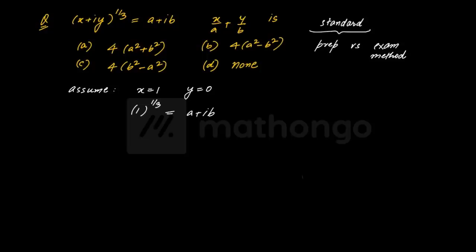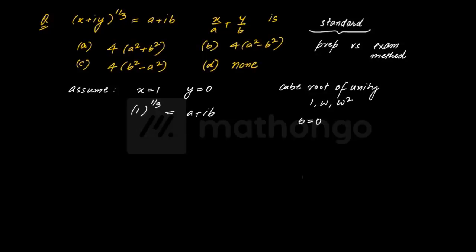Toh dekha jaaye ki cube root of unity ka question hoga. Cube root of unity humein pata hai kitne hote hain - teen hote hain: 1, omega, omega square. Toh 1 toh nahi loonga. Agar main 1 loonga toh yahaan se b ki value kitni ho jaayegi? Agar aap isko sirf 1 lete hain aur equate karte hain, toh b kitna hota hai - 0. We'll not take that 0, because b denominator mein hai, woh possible nahi hai. Toh, ek kaam karte hain - omega lete hain.